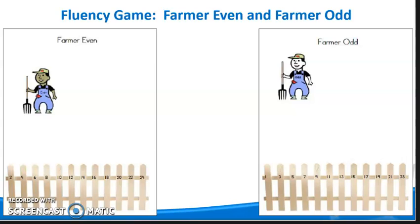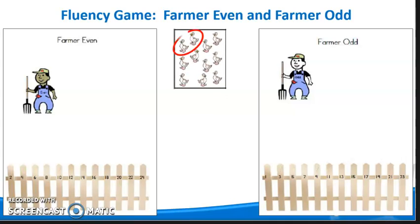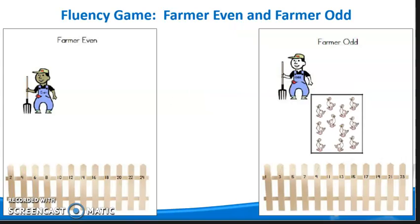Also included in this week's packet is a fluency game. This week, students will be working with even and odd numbers. The first card shows 11 ducks. After pairing the ducks up in twos, there is one duck left over. This makes 11 an odd number, so that card is given to Farmer Odd.